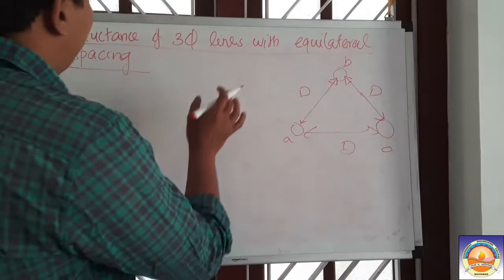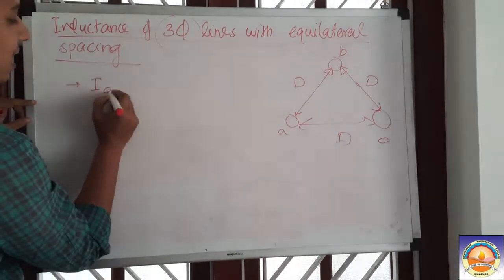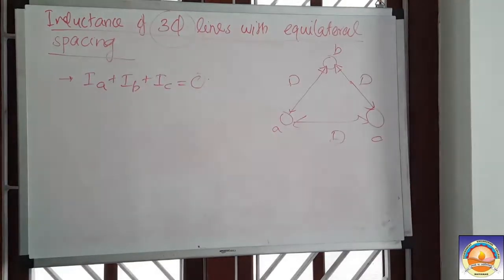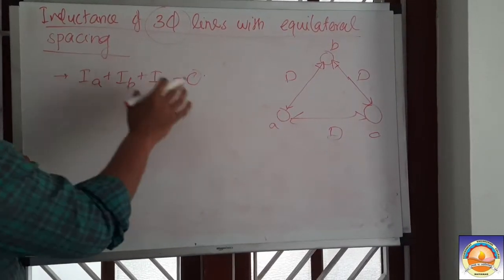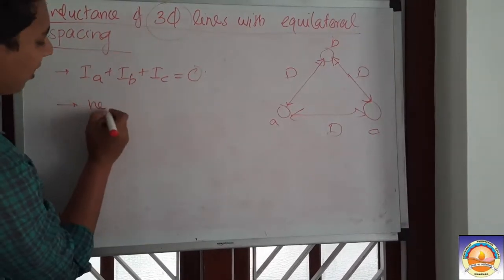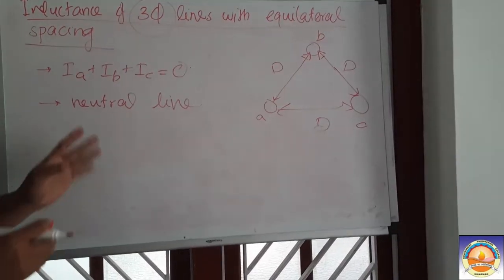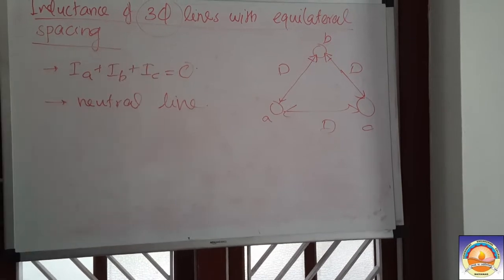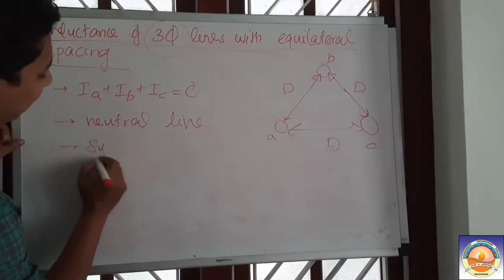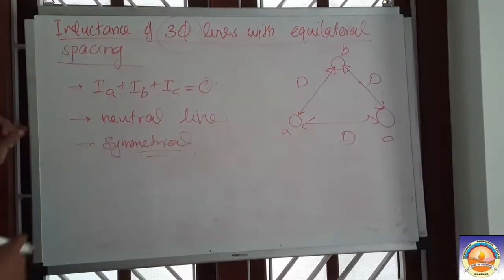When we say these are three-phase lines, it means that IA plus IB plus IC equals zero. That is what is meant by a three-phase line. Here we are not having a neutral line — only three conductors are there. Since IA plus IB plus IC equals zero, this is a symmetrical line.